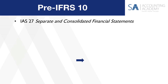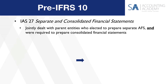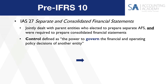Before IFRS 10, we had IAS 27, named Separate and Consolidated Financial Statements. That was the standard that dealt with financial statements of a parent entity that elected to prepare separate financial statements, and then also all the concepts related to the parent's consolidated financial statements. So it jointly dealt with preparing separate and consolidated financial statements. Control in IAS 27 was defined as the power to govern the financial and operating policy decisions of another entity. The definition was relatively simple, and there wasn't as much guidance in IAS 27 relating to control as there is in IFRS 10.